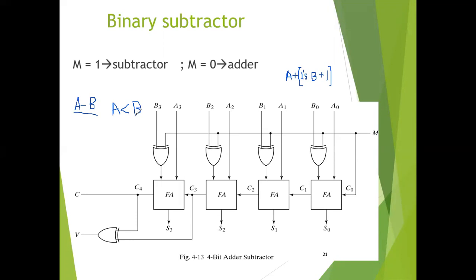Addition and subtraction operations can be combined into one circuit with one common binary adder by including an exclusive-OR gate with each full adder. As we studied the four-bit binary adder, we use four full adders for the addition process. To perform binary addition and subtraction, we include an exclusive-OR gate with each full adder. This operation can be realized by controlling inputs to a parallel adder, and in this diagram this is a four-bit adder-subtractor circuit.